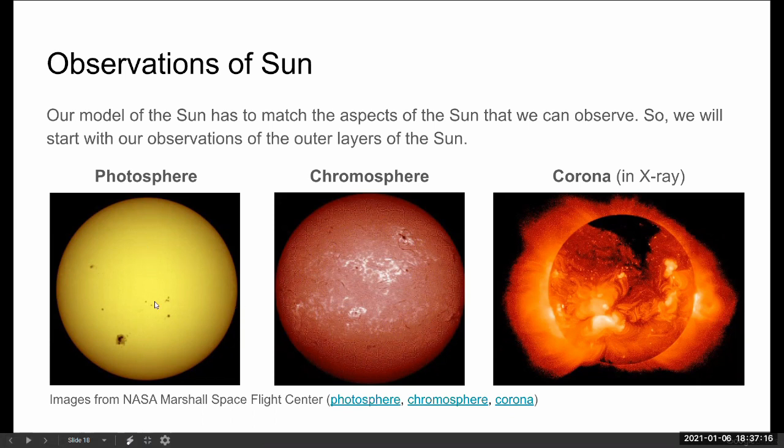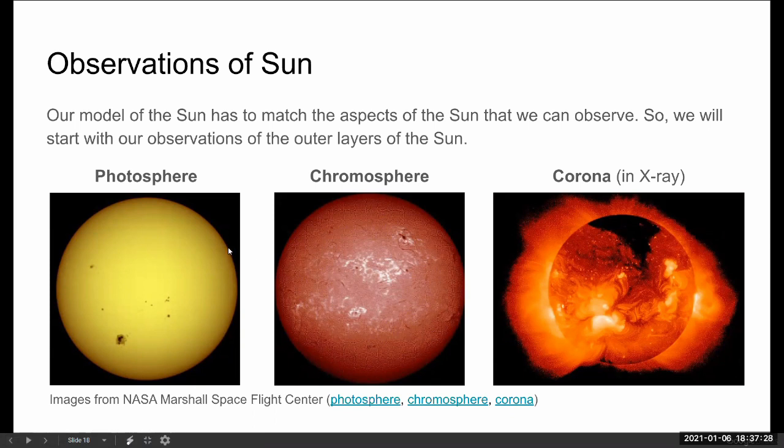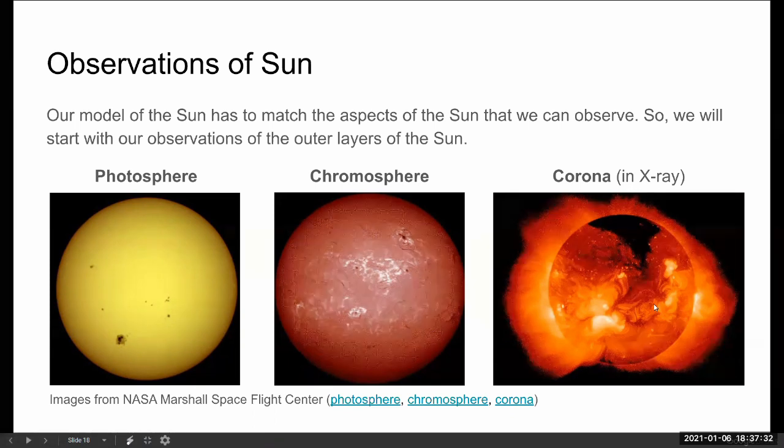The photosphere, that's just a photo. You just need something to dim the light so that your equipment doesn't burn. To get the chromosphere, I think you start needing better filters to filter out most of the visible light. To get the corona, this is an x-ray. So now you need something that's more than your garden variety camera. But these are the observations of the sun.